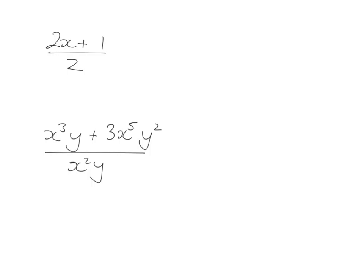Okay, let's see how this works. This one here we are going to be saying that - distribute. So we're going to have 2x over 2 plus 1 over 2. The 2's cancel, we get an x, and we can't do anything with that half.